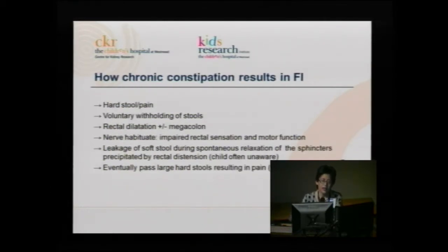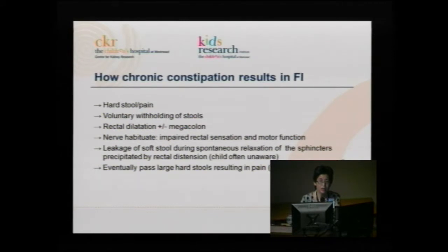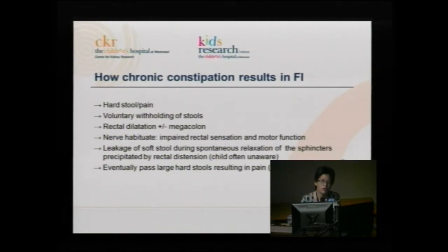How does chronic constipation result in faecal incontinence? It's usually a vicious cycle: the kid passes a hard stool, it hurt, so they decide they don't like doing a poo and voluntarily withhold stooling. As a result, they get rectal dilation, which may even result in megacolon. After doing this for a while, the nerve habituates and they end up with impaired rectal sensation and motor function — they don't feel they need to poo at the normal rectal fullness threshold and when they defecate, they have poorer pressures. This results in leakage of soft stools during spontaneous relaxations of the sphincter precipitated by rectal distension.